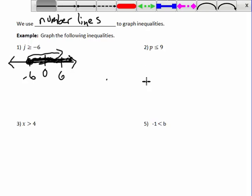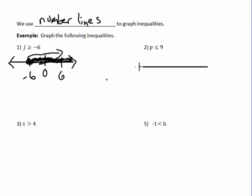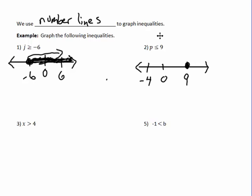Next: p is less than or equal to 9. On the number line, the key value I care about is 9. I want to show all values less than or equal to 9. Again I use a closed circle because it includes equal to, and I shade to the left — 0 is less than 9, so I go this way.